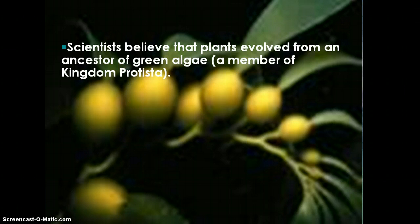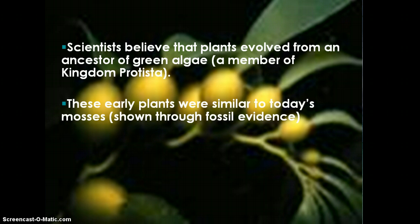A few quick facts before we get started. Scientists believe that plants evolved from an ancestor of green algae, which was a member of the kingdom Protista. We talked about plant-like protists and animal-like protists — those plant-like protists had chlorophyll, or something called proto-chlorophyll, that allowed them to make their own food. That algae was most likely the ancestor of all living plants today.